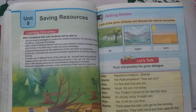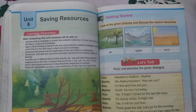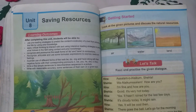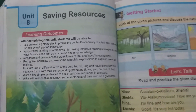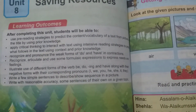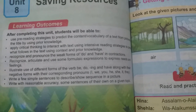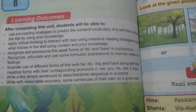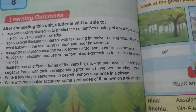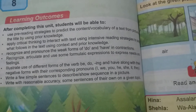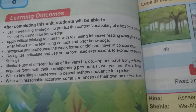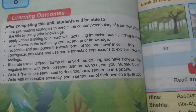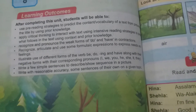Toh yeh page number 80 ko humne dekha. Unit number 8 mein pehle resources humein bataye gaye — 'Saving Resources' ka naam hai. Isme learning outcomes mein present tense mein I, we, you, they aur he, she, it ko kis tarah se istemaal karna hai, is sabaq mein yeh aayega. Iske ilawa negative form yaani 'do not' aur 'does not' ka istemaal bhi aayega.